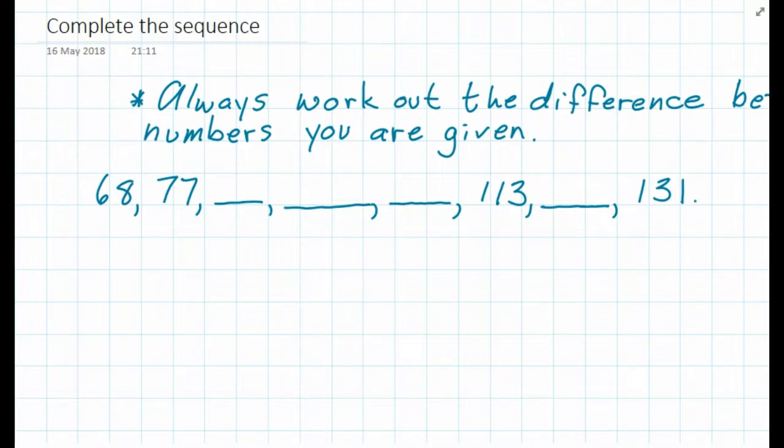When you're given a pattern of numbers or a sequence, you need to find the numbers that are close to each other and work out the difference between them. So what you do is you take 77 and you subtract 68.